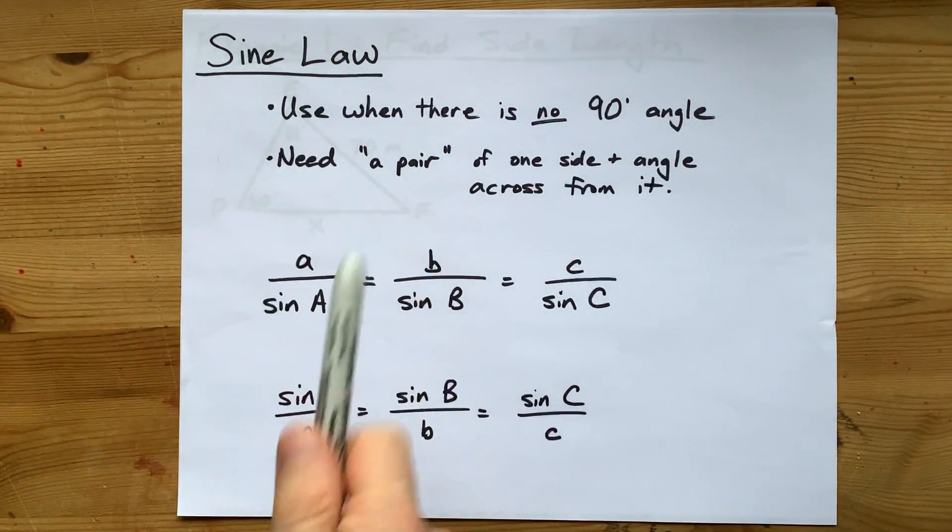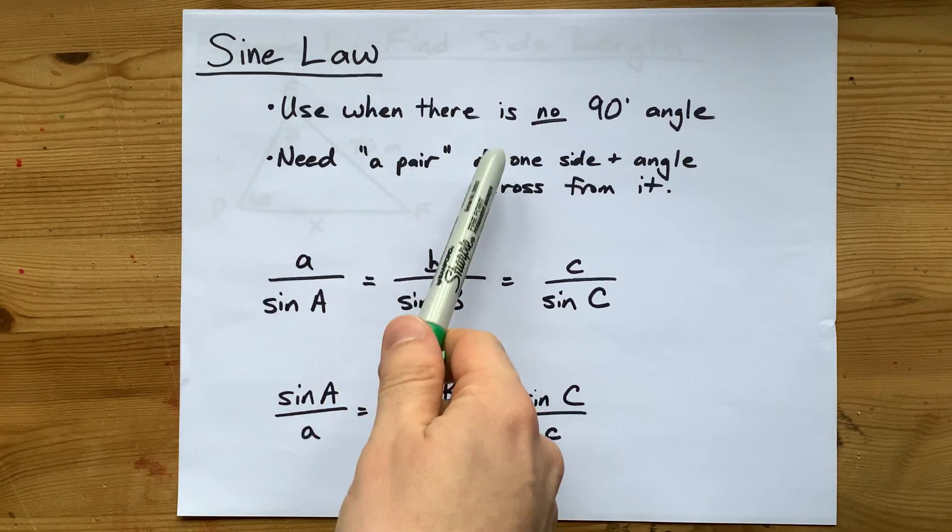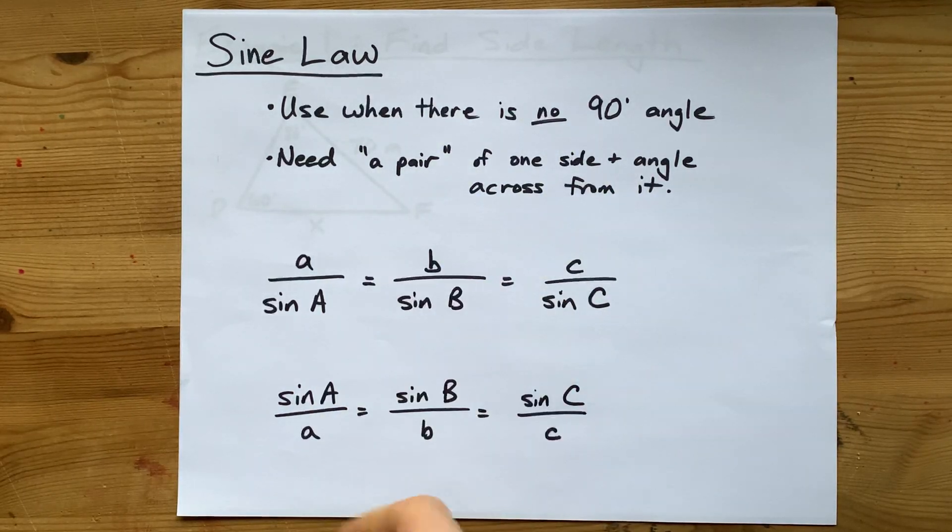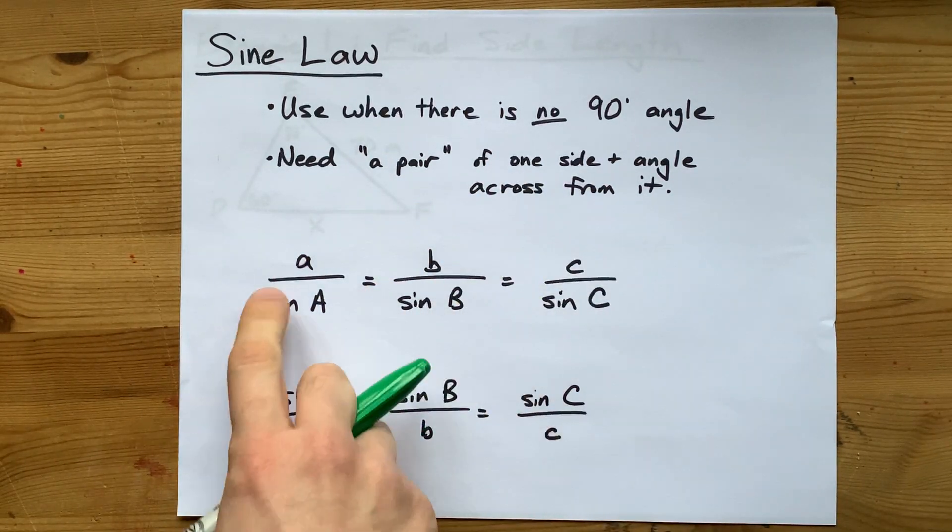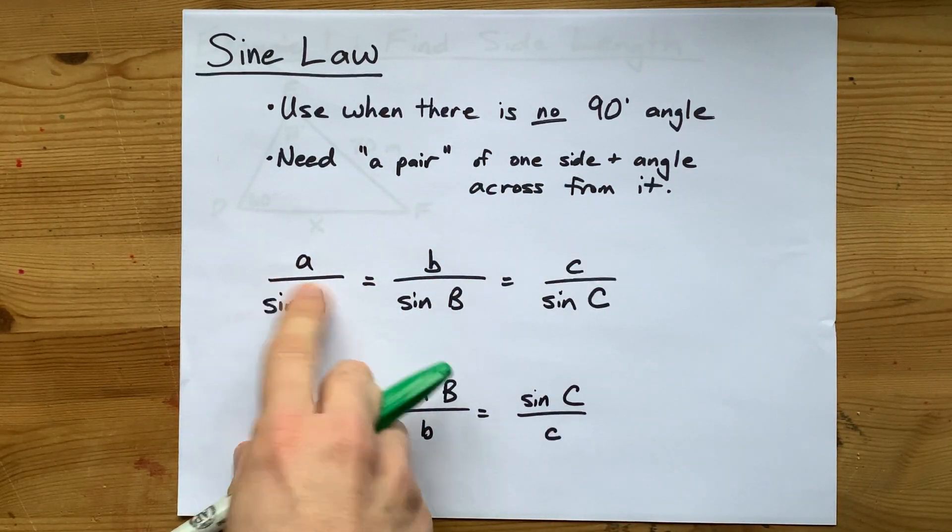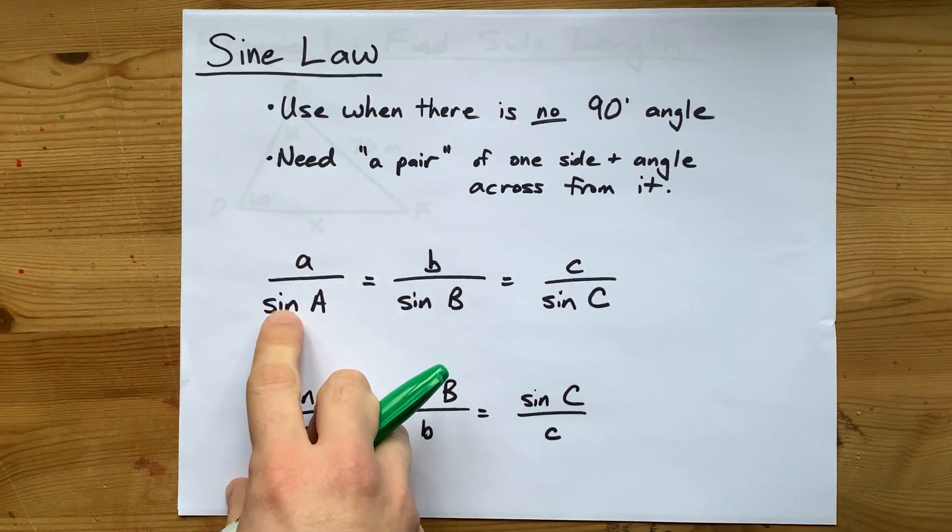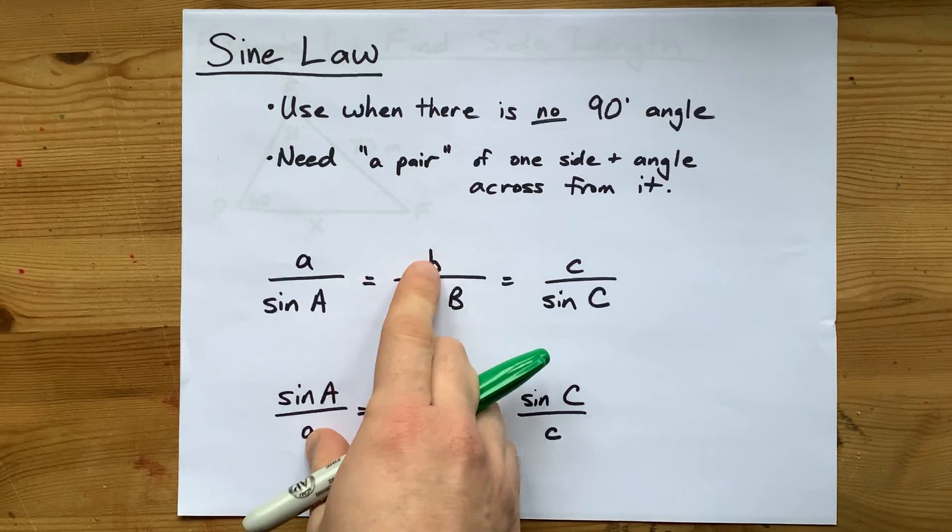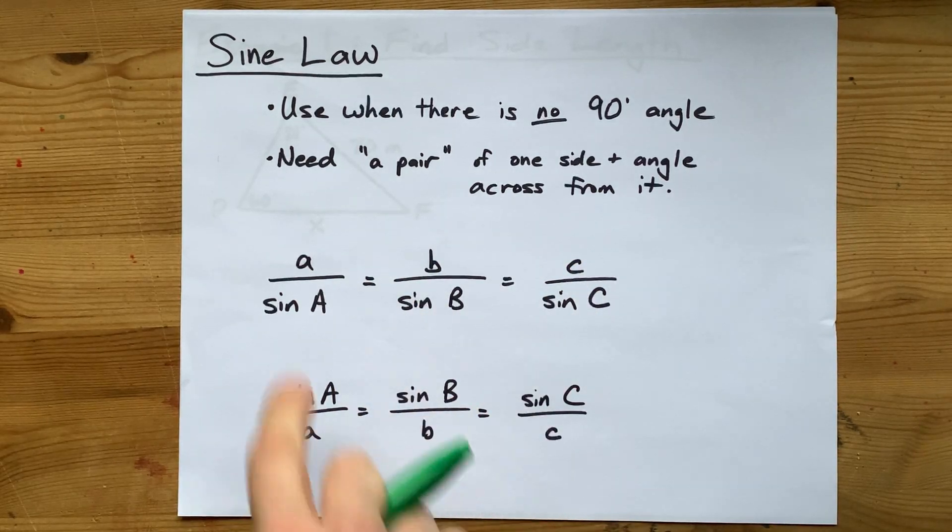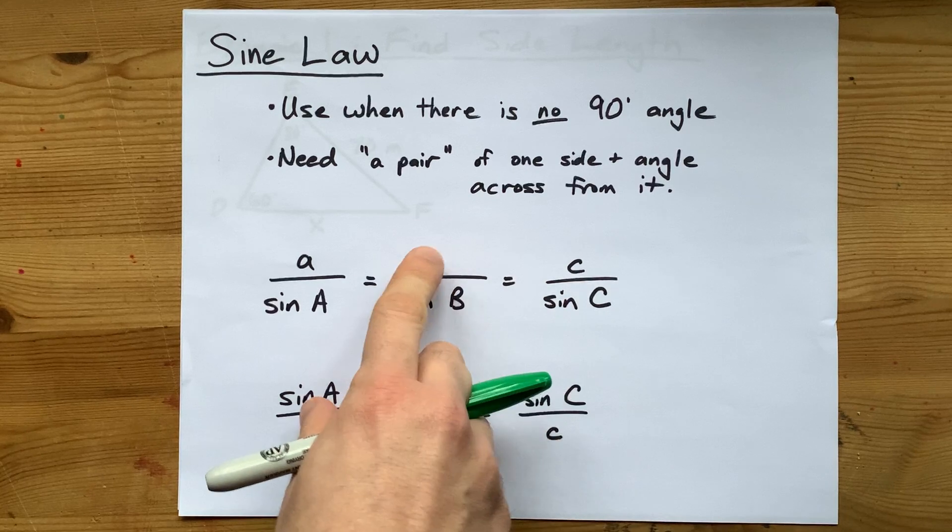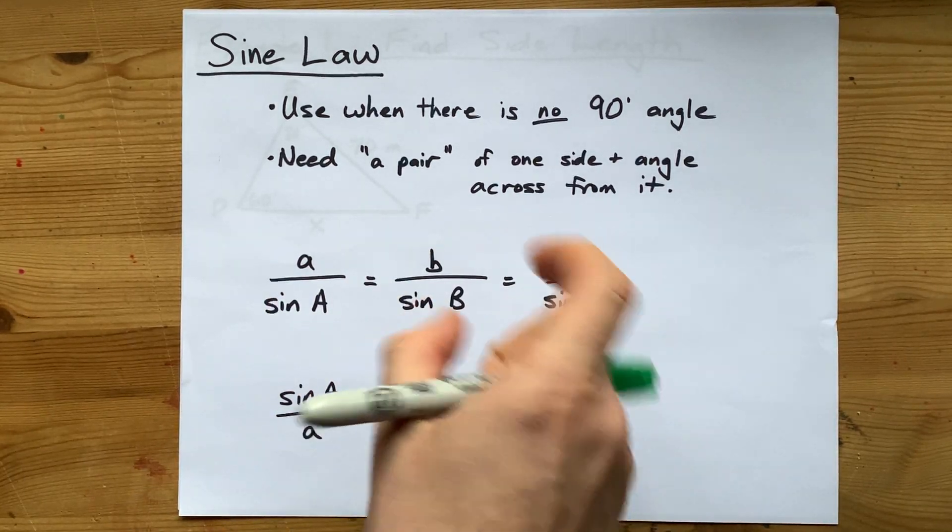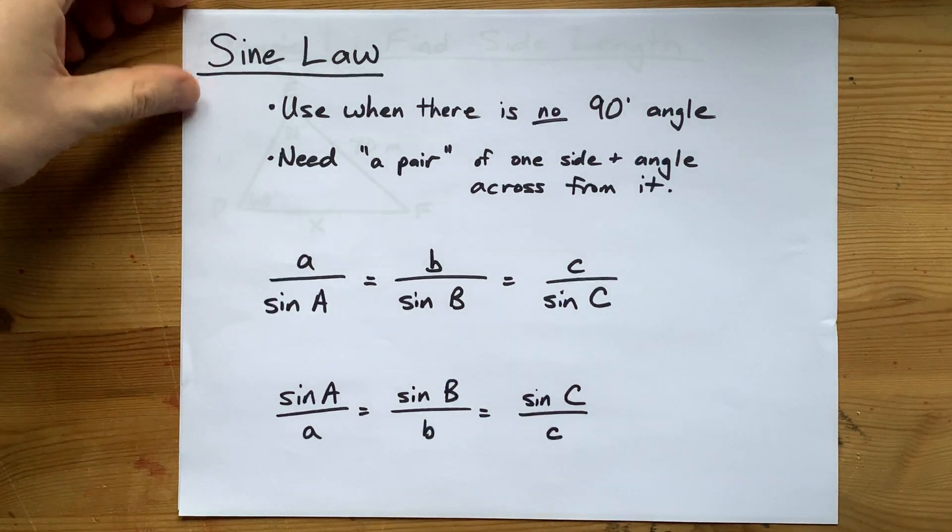To use sine law, you're also going to need a pair of a side and the angle that's across from it known within the triangle. Now the formula is that the side length divided by the sin or sine of the angle across from it is the same for all three sides of the triangle. These letters could be anything, but we use lowercase letters for the side lengths and capital letters for the angles that are across from them.